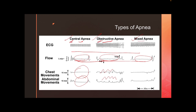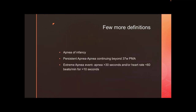Mixed apnea is a combination of central and obstructive apnea — it starts as central, then the brain realizes it has forgotten to give the signal and continues to fire, but by then an obstructive component comes into play. Initially there are no chest or abdominal movements, followed by some movements giving an obstructive component but with no airflow, and then if the problem is relieved airflow resumes.